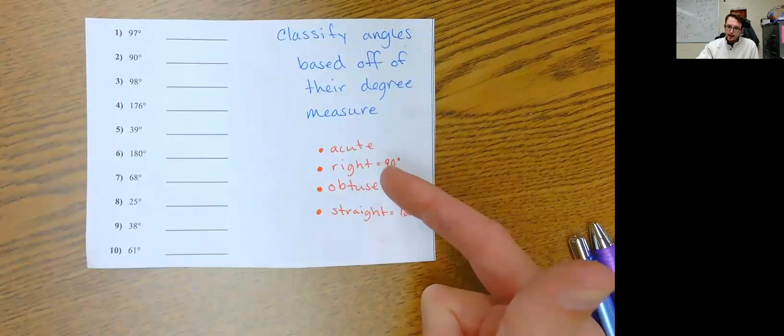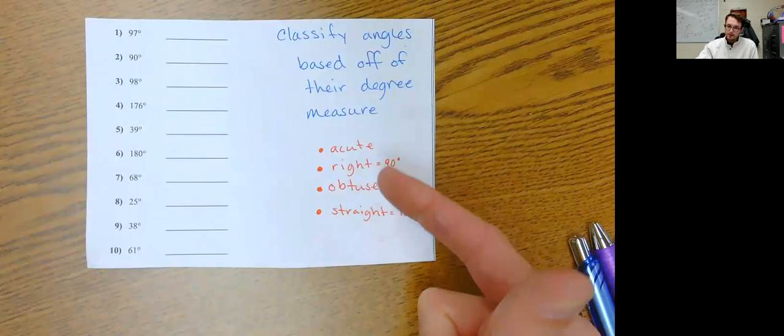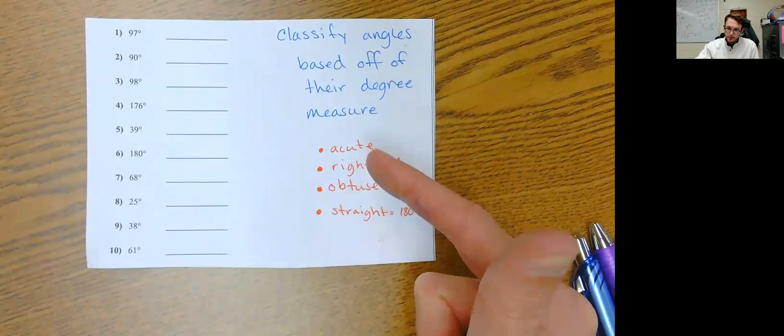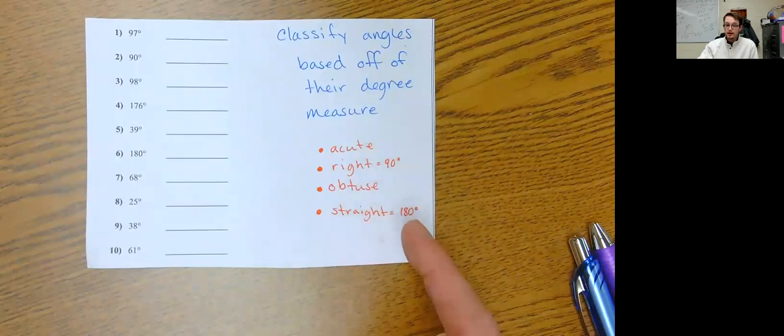A right angle is exactly 90. An obtuse angle is between a right angle and a straight angle, so between 90 and 180. And then a straight angle is 180 degrees. So what I would like for you to do